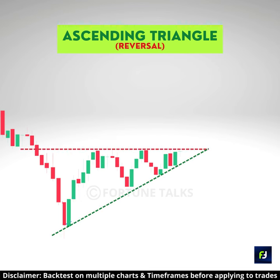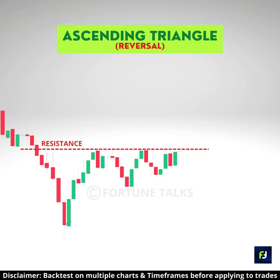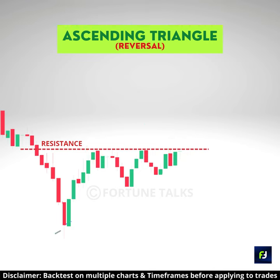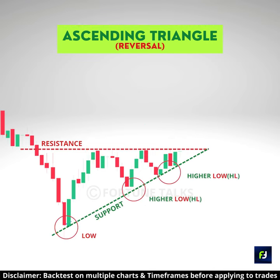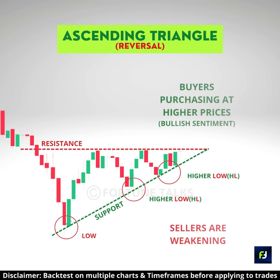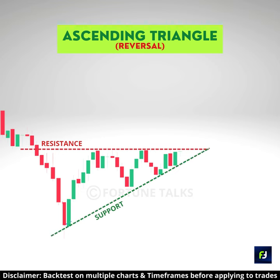The ascending triangle, or rising triangle pattern, consists of a flat resistance line that connects the highs of the pattern, and an ascending trend line that connects various higher lows, which shows that demand is rising and the buyers are slowly pushing the price up, strengthening the bullish bias.